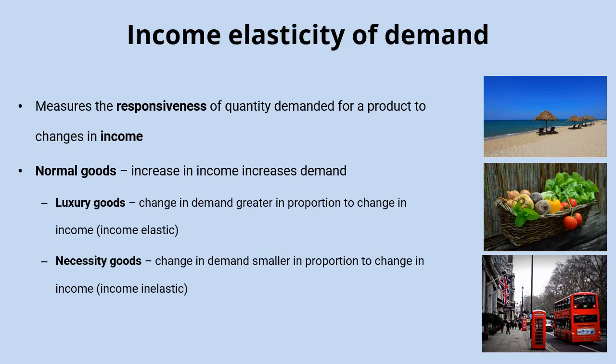There are also goods where incomes rise and demand increases, but it's smaller in proportion to the change in income. For example, fruit and vegetables — you wouldn't find people buying hundreds more tomatoes and cabbages. But overall, if income increases, people will consume a little bit more of those goods, so we can call them income inelastic goods.